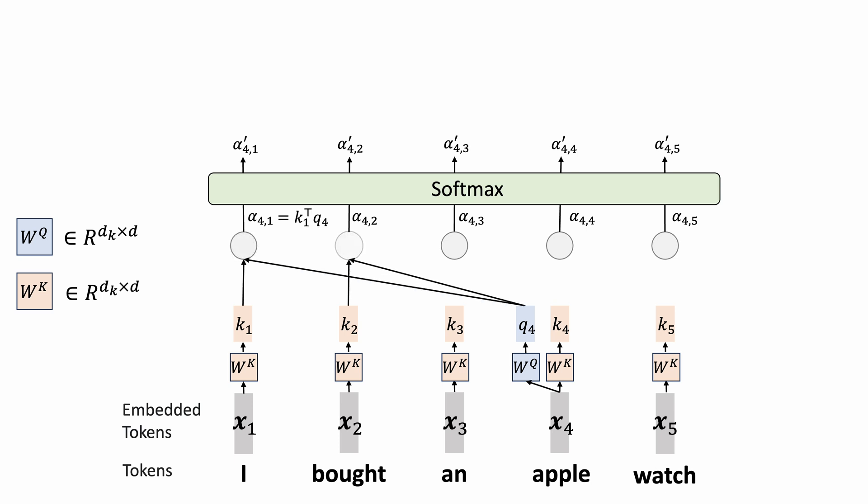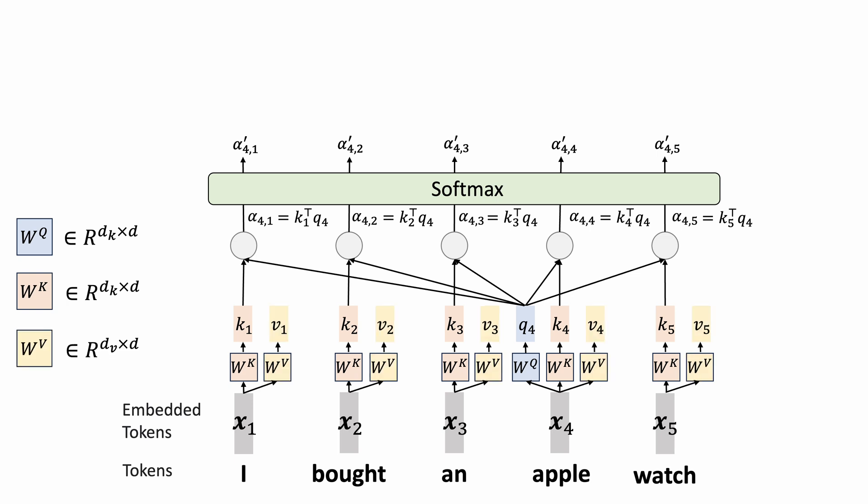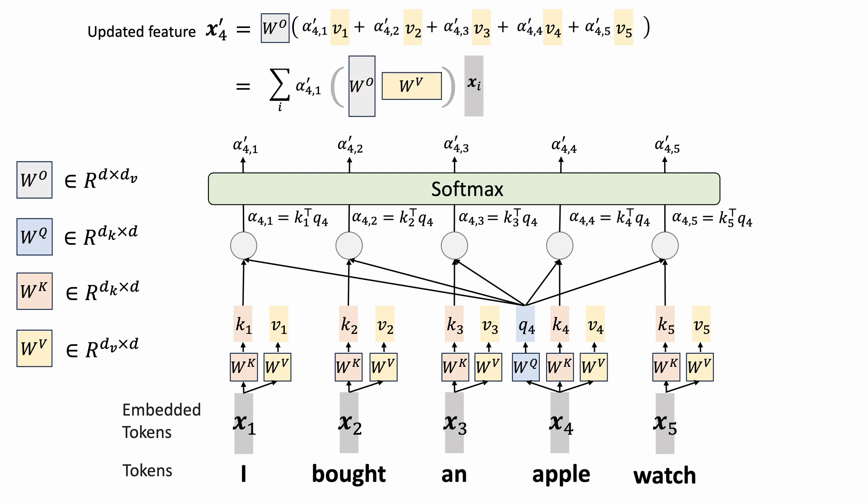We can then compute the relevance using vector dot product followed by softmax normalization. But instead of using token embedding itself, we compute the value vectors by learning the weight matrix wv. This provides more flexibility in extracting meaningful contextual information for the task. We can compute the updated features with context using a weighted average of these value vectors. In practice, the dimensionality of the value vector dv is smaller than that of the embedding vector d. To ensure that the output feature vectors have the same dimensionality, we use the learnable matrix w0 to transform the dv dimension vector back to d dimension. Intuitively, you can view the multiplication of these two matrices, w0 and wv, as the lower-rank approximation of the actual value matrix.